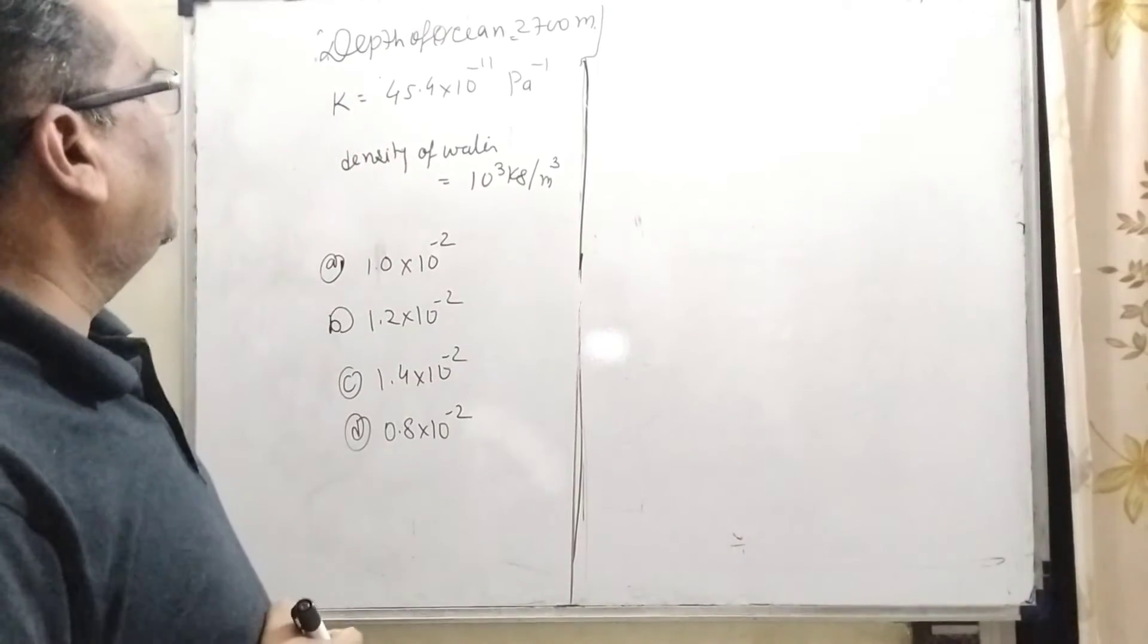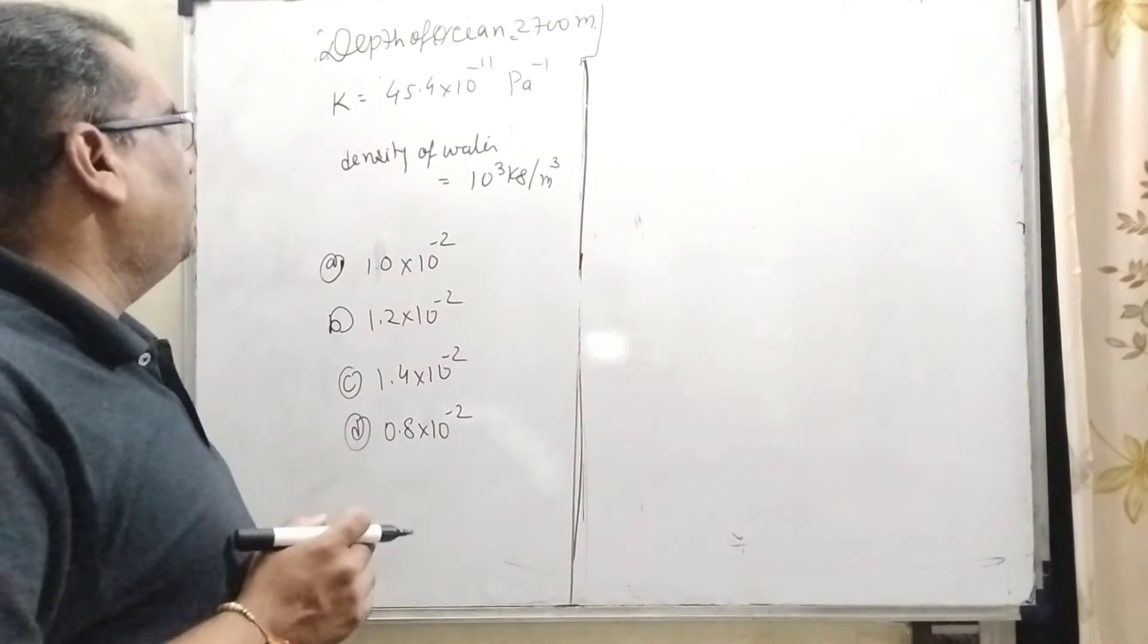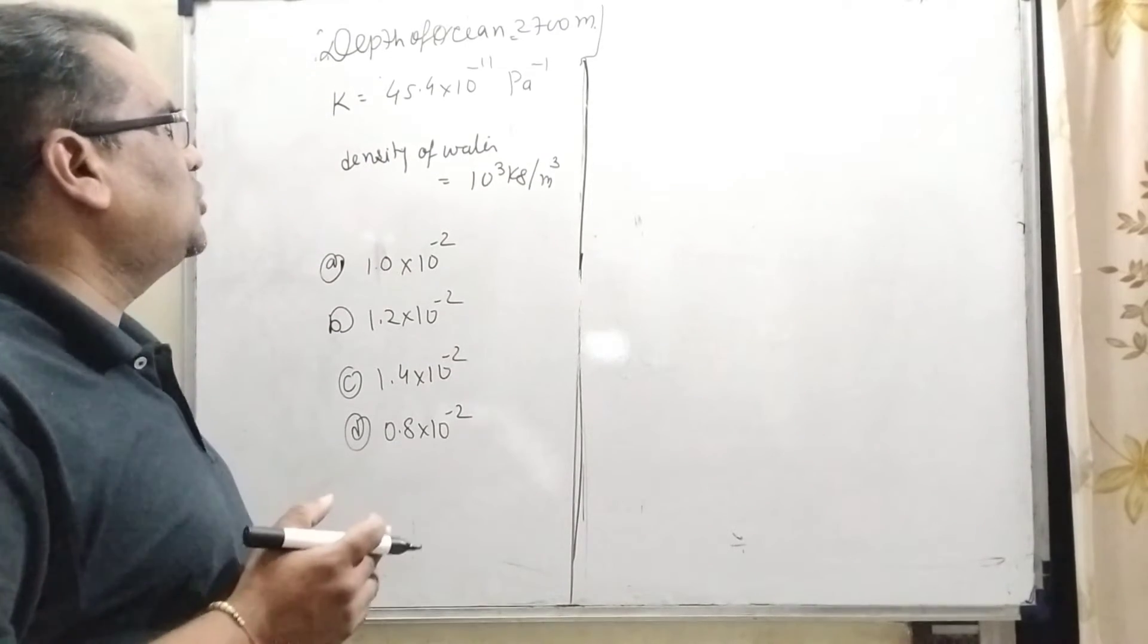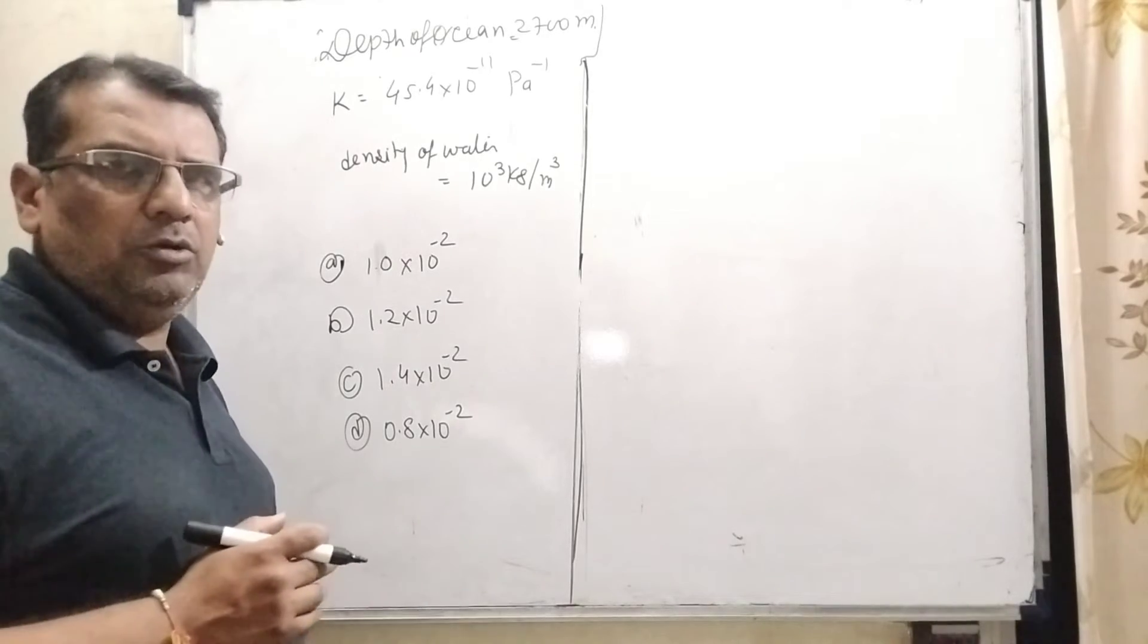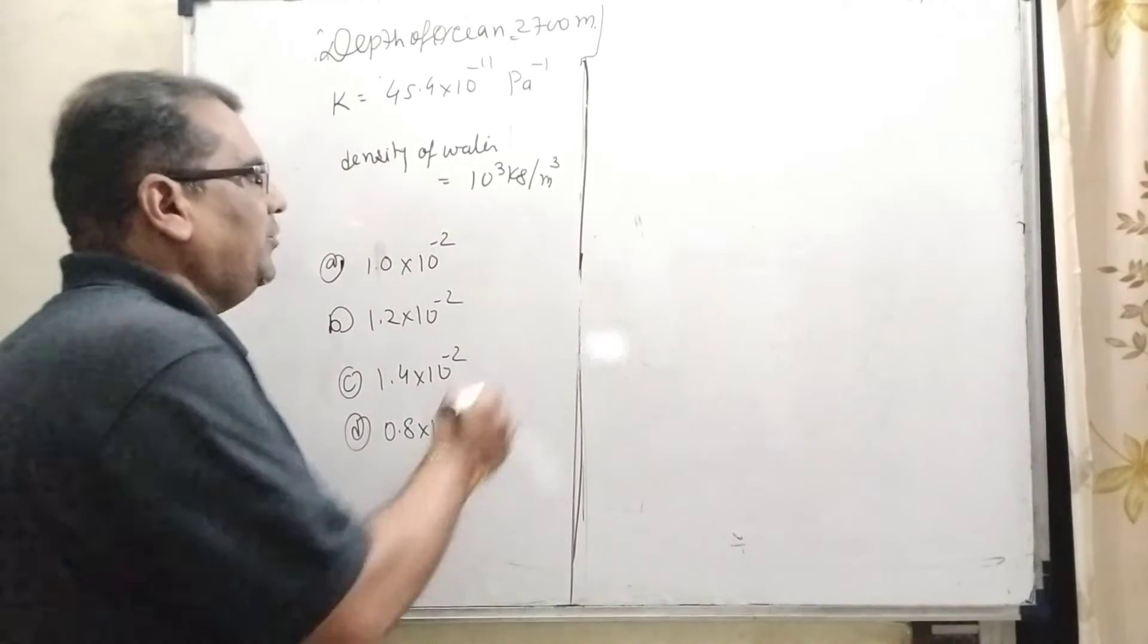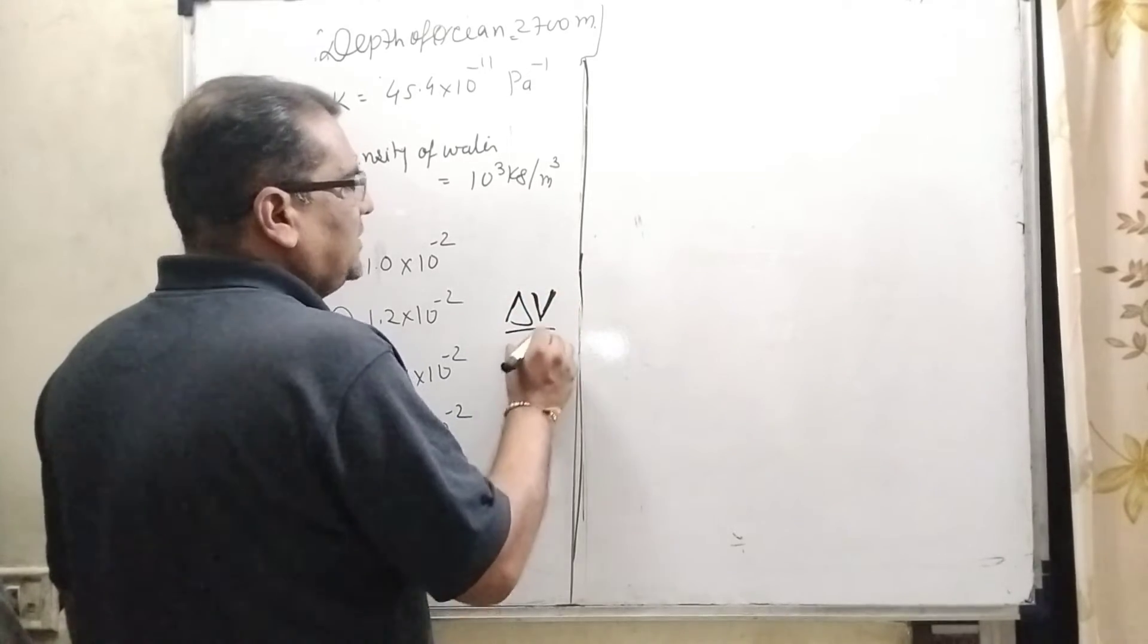Now all the information we have is given already. Depth of ocean, that is 2700 meters, and compressibility 45.4 × 10^-11 per Pascal, and density of water is given 10^3 kilogram per meter cube. And what we have to find out? We have to find out fractional compression, which is ΔV/V.